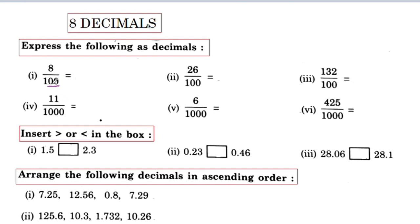We have two zeros. We can convert the number in a decimal — if you have two zeros, we can convert the number in a decimal. When we convert the number in a decimal, as per the number in a decimal, we can convert the number in a decimal.